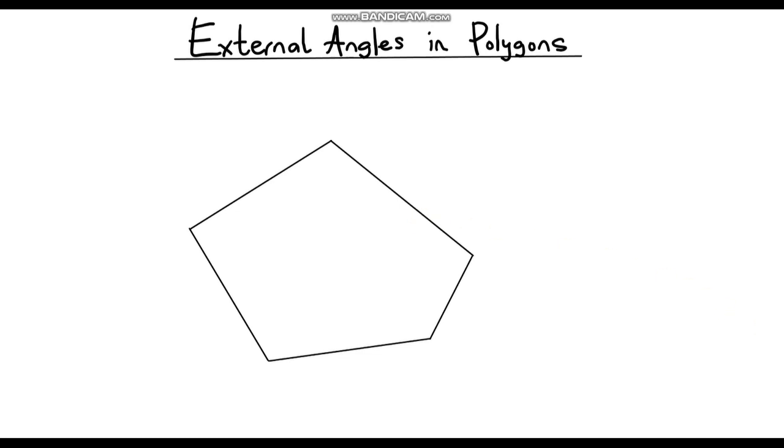First of all, hopefully you already know what internal angles are. On our diagram here we've got a nice looking pentagon, so the internal angles of our pentagon will just be these angles that I'm drawing in blue. They are obviously inside the shape - easy way to remember these are internal angles.